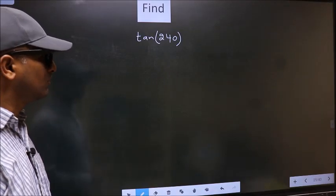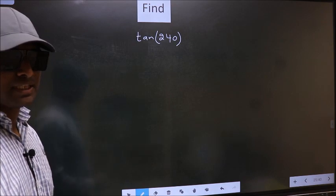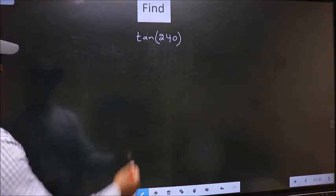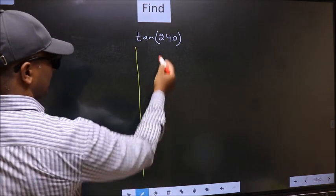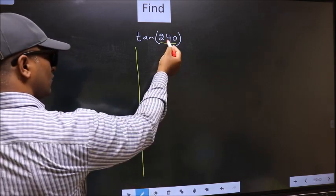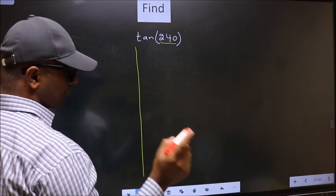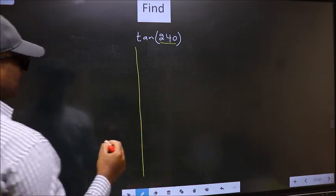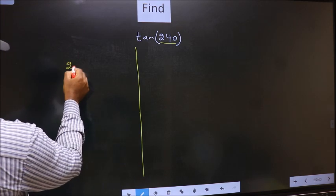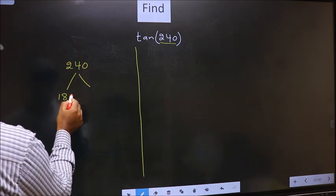Find tan 240°. To find this, we should follow this method. Here we have 240. Now we should check which two multiples of 180 does 240 lie between. What I mean is, 240 lies between 180 and 360.